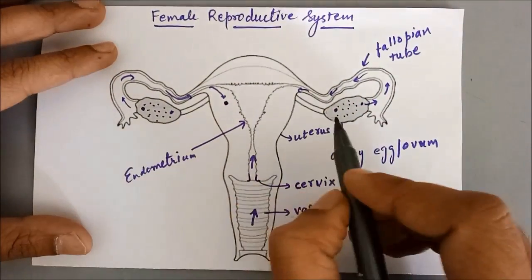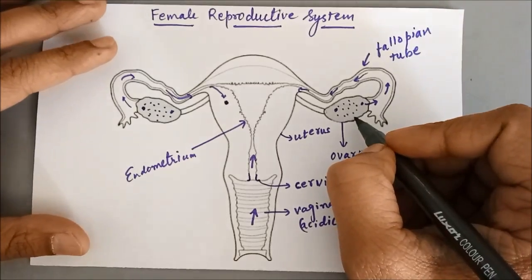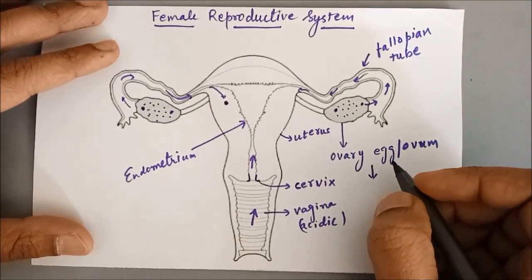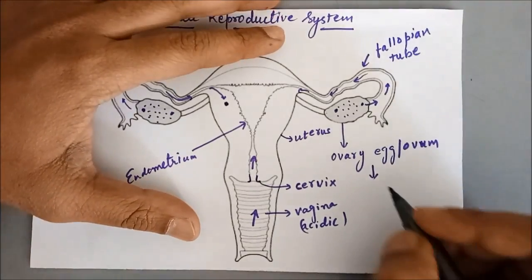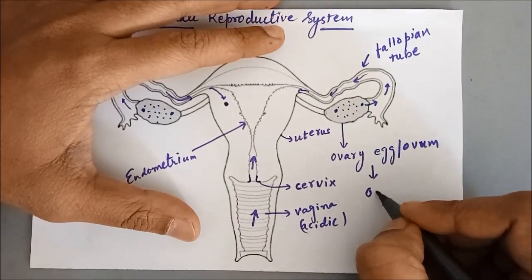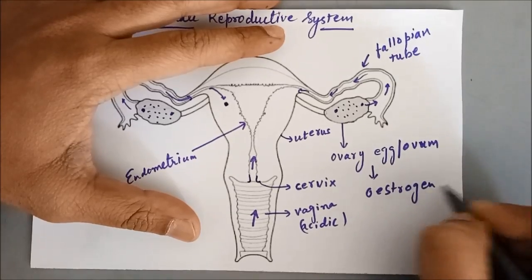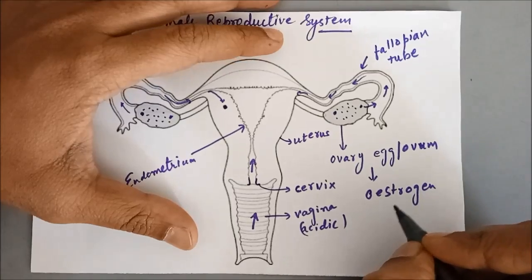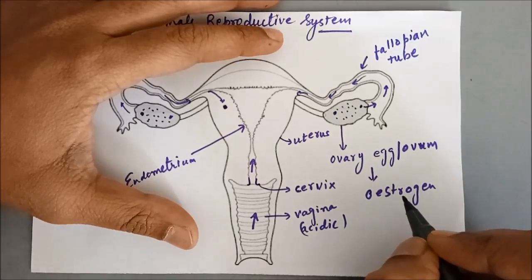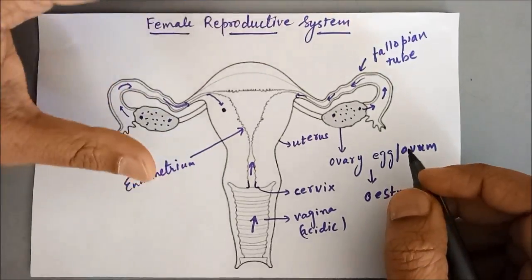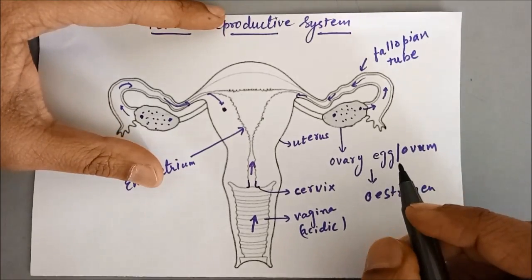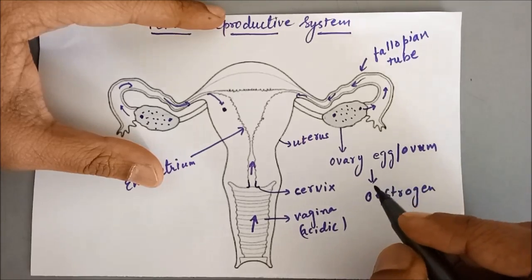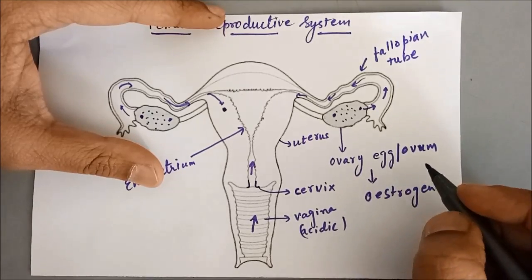Now apart from this, the ovary is also an endocrine gland. It produces two main hormones — the first is called estrogen. Estrogen helps in developing the secondary sexual characteristics in females, like body hair growth, development of breasts, widening of hips, and so on.